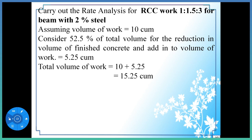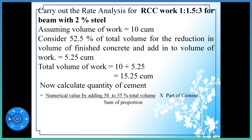After calculating total volume, we calculate the quantity of cement using the formula: numerical value by adding 50 to 55% of total volume, divided by sum of proportion, into part of cement. So 15.25 divided by the sum of proportion 1:1.5:3, into part of cement 1, which is equal to 2.772 cubic meter.